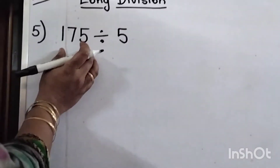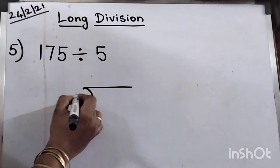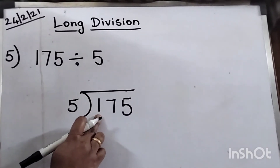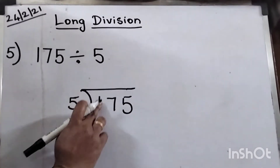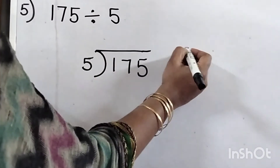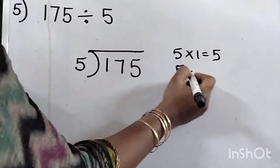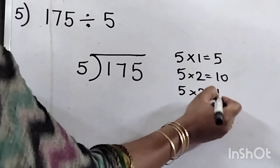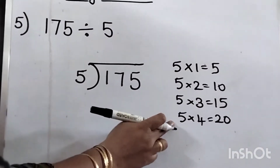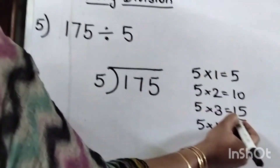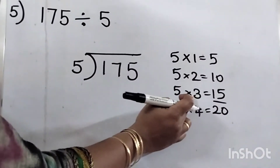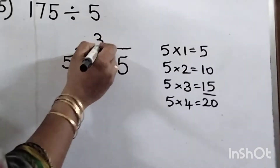Next we will divide with 3-digit numbers. 175 divided by 5. Look for the first digit — there is 1 here. We can't divide with a single digit because it is less than the divisor. So I am taking the next digit also — that is 17. Say 5 tables: 5 ones are 5, 5 twos are 10, 5 threes are 15, 5 fours are 20. There is no 17 in the 5 times table. Look for the nearest lesser number — it is 15, which is 3 times.